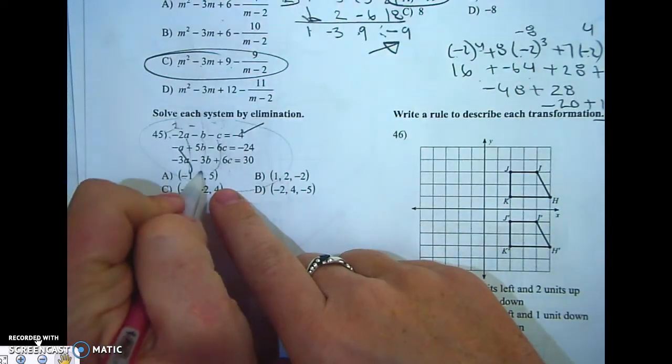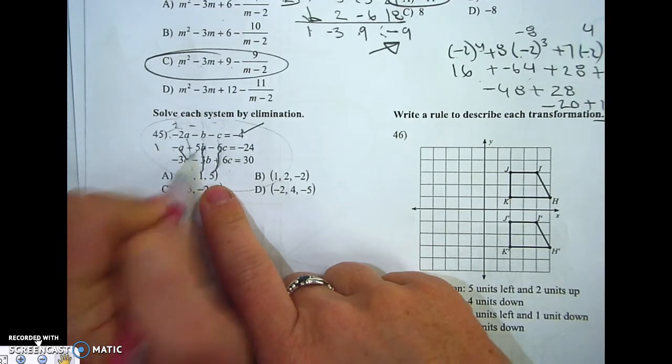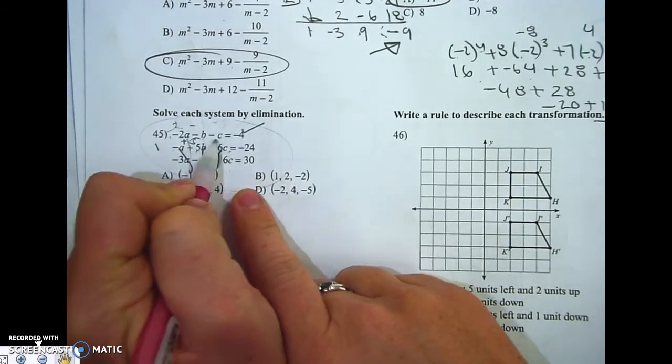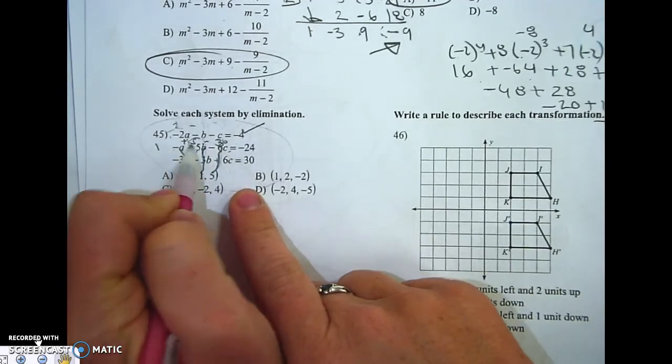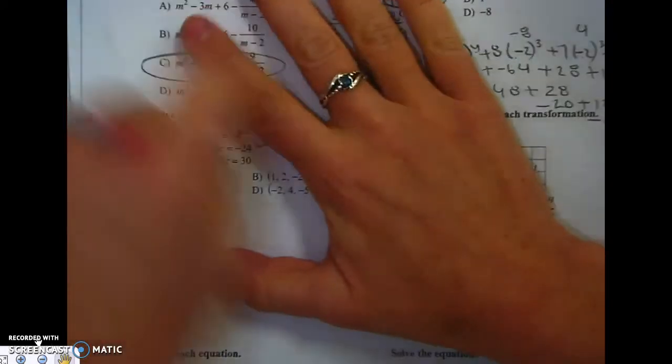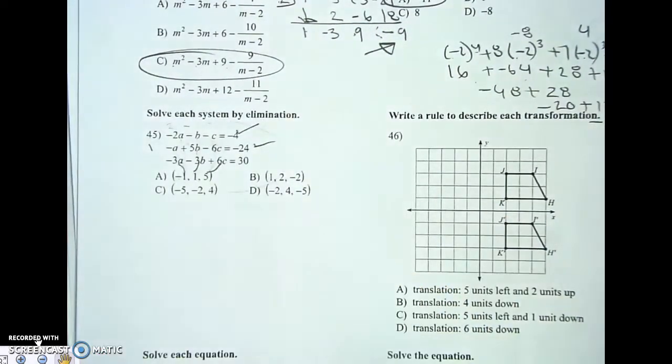So plug that in there, that in there, that in there. Negative of negative 1 is 1. 5 times 1 is 5, so we have 1 plus 5. 6 times 5 is 30. 1 plus 5 is 6, minus 30 is negative 24. Good to go. Let me just check the third one. I don't want to circle it, get the wrong one, just because I'm too lazy to check the last one.